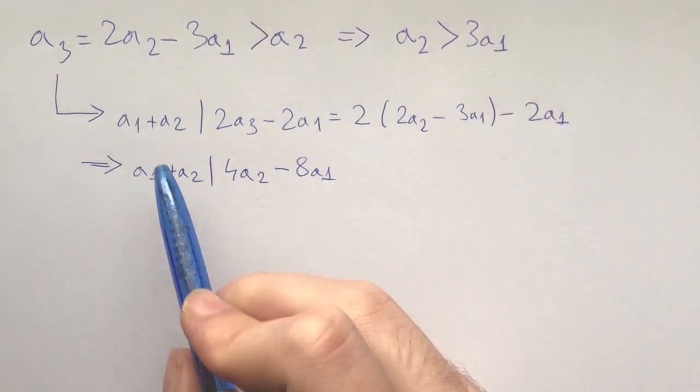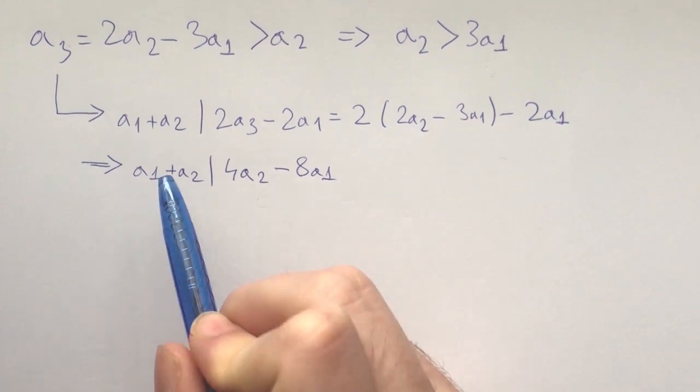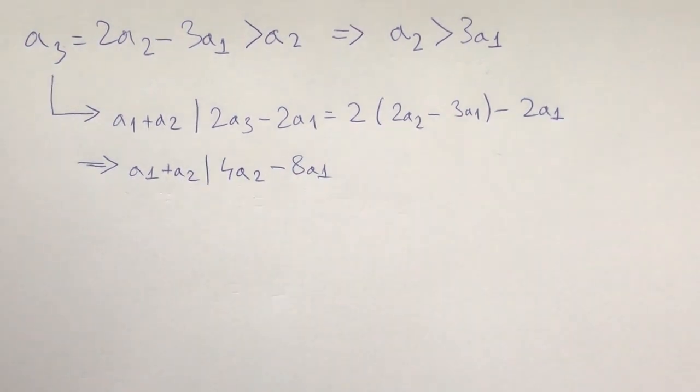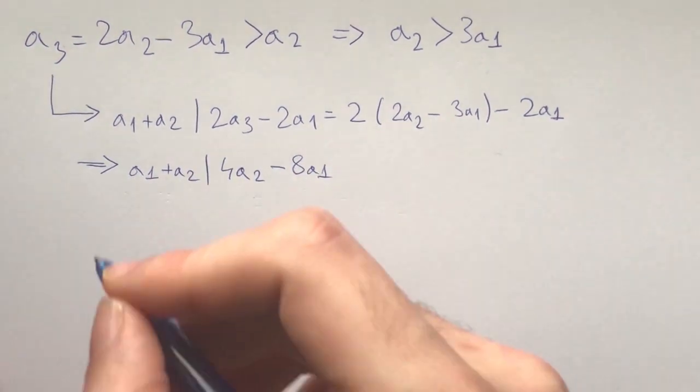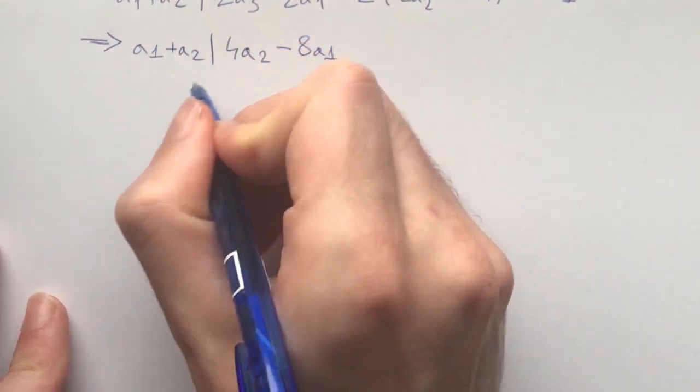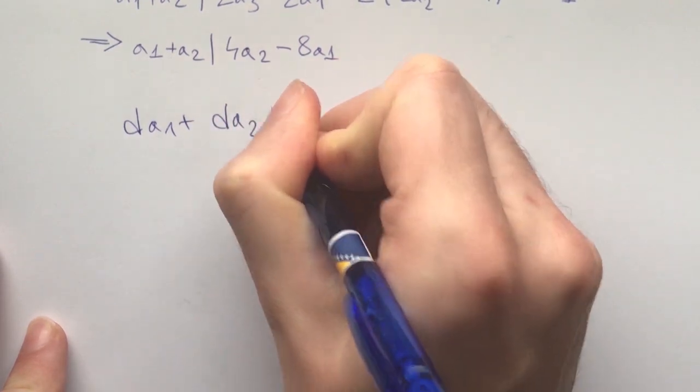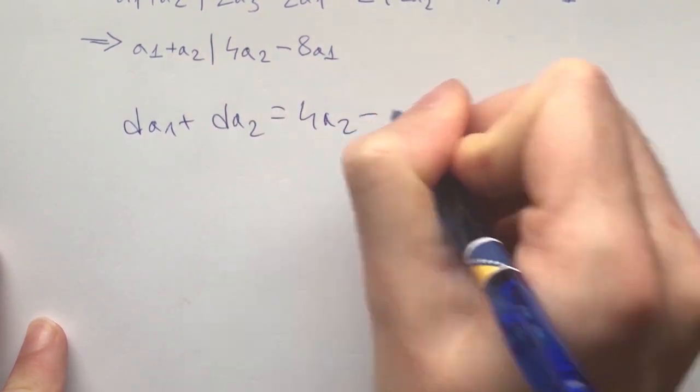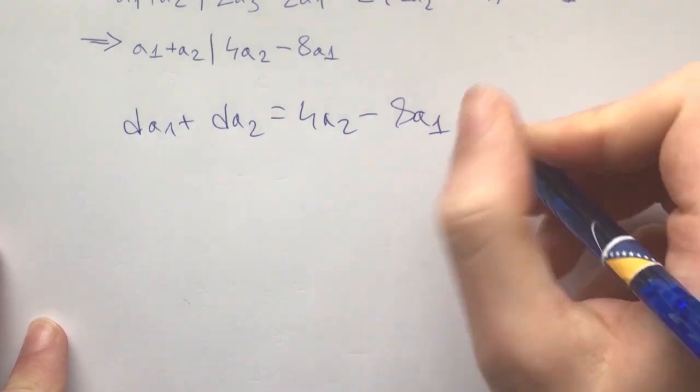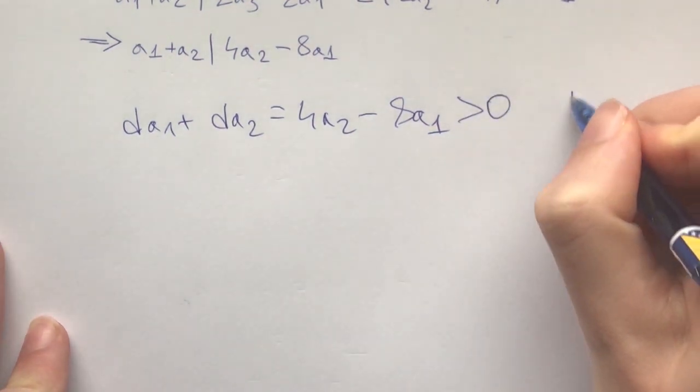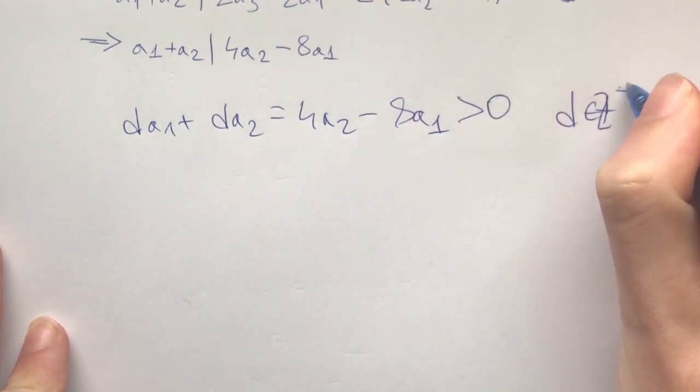Now the final condition that we are left with is a1 + a2 divides 4a2 - 8a1, while also a2 being greater than 3a1. If you haven't paused before, pause for a minute now and think how would you solve this. Here's my take on this: it is the same pattern we saw before. There exists a d such that d·a1 + d·a2 equals 4a2 - 8a1.